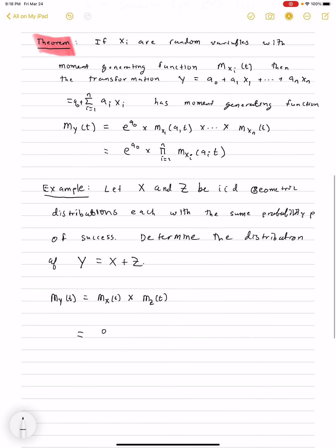So this will be p e^t divided by 1 minus q e^t multiplied by p e^t divided by 1 minus q e^t. Now let's simply combine this, and I'm going to write it as, well, it's simply p e^t divided by 1 minus q e^t and squared.